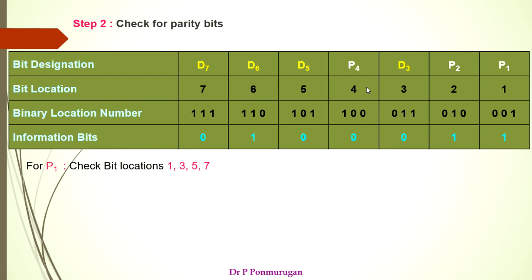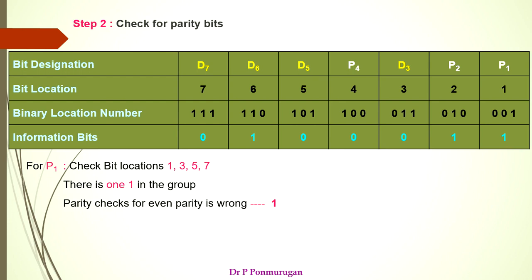For P1, we have to check the bits at locations 1, 3, 5, and 7. If the parity bit satisfies the assumed parity, we place 0; if it is wrong, we place 1. Checking bit locations 1, 3, 5, and 7, there is only a single 1 in that group. This does not satisfy the even parity condition, so it is wrong and we place a 1.